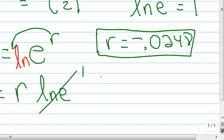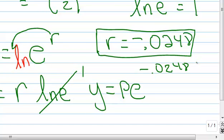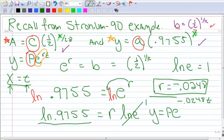So now I can make a fourth model. I'm sorry, a third model. y equals p times e to the negative .0248t. And that's my new model.